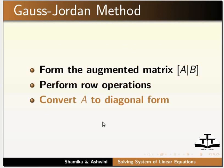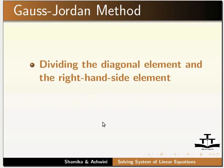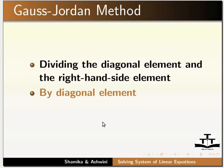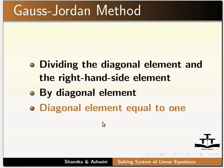In diagonal form, only the elements A, I, I are non-zero. Rest of the elements are zero. Then we divide the diagonal element and corresponding element of right-hand side element by the diagonal element. We do this to get diagonal element equal to 1. The resulting value of the elements of each row of the right-hand side matrix gives the value of each variable.